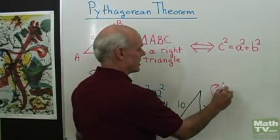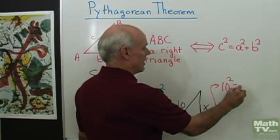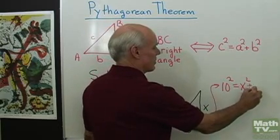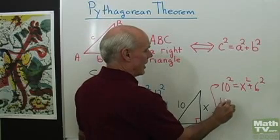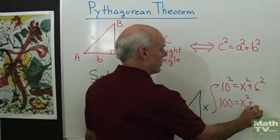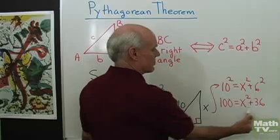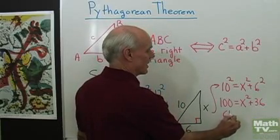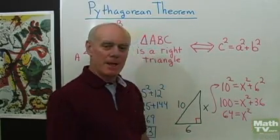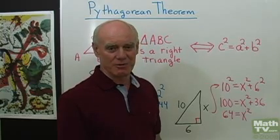I'm going to say the longest side squared, 10 squared, is the sum of the squares of the other two sides. So X squared plus 6 squared, so I get 100 is equal to X squared plus 36. I subtract 36 from both sides, I get 64 is equal to X squared.